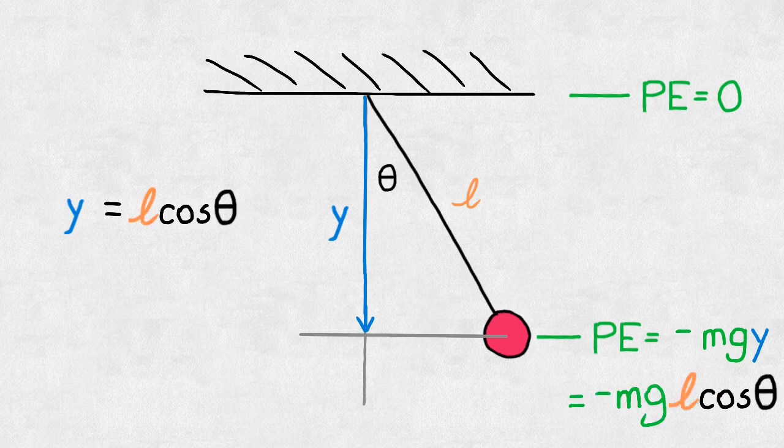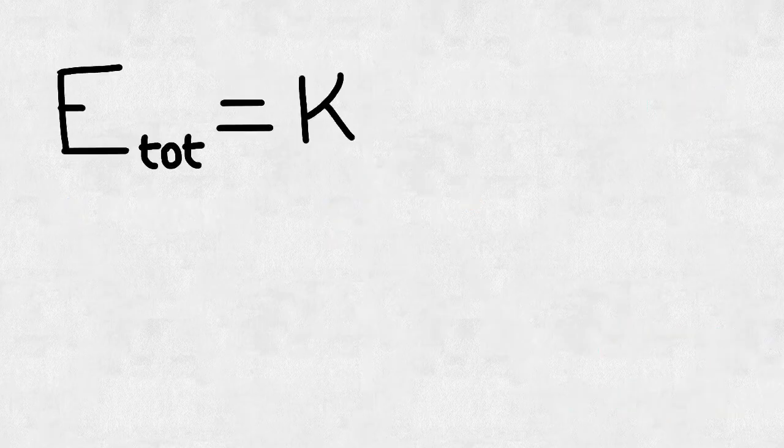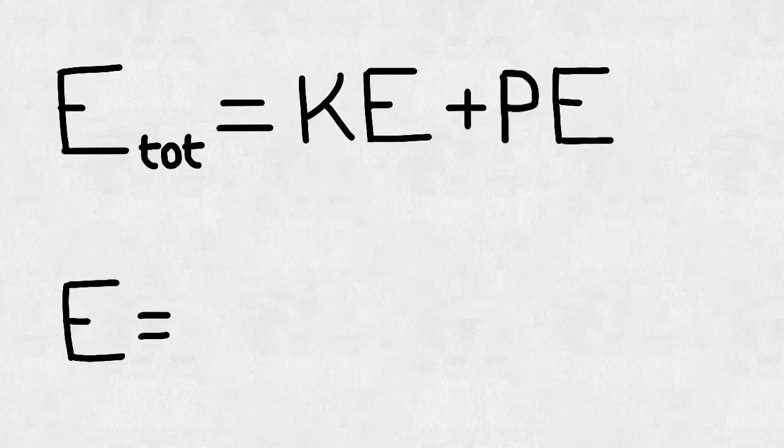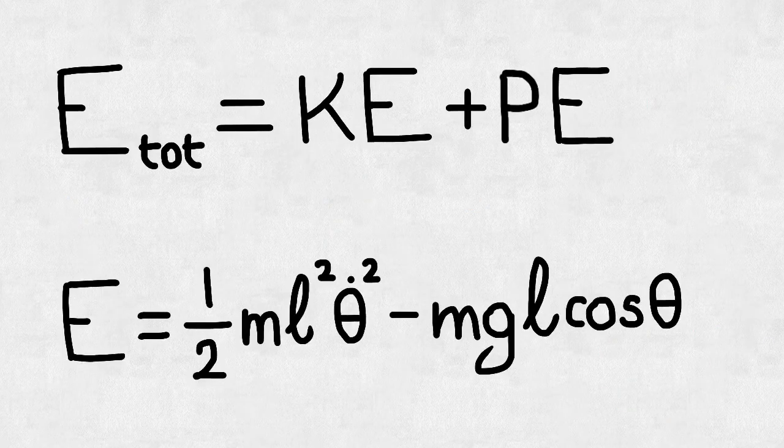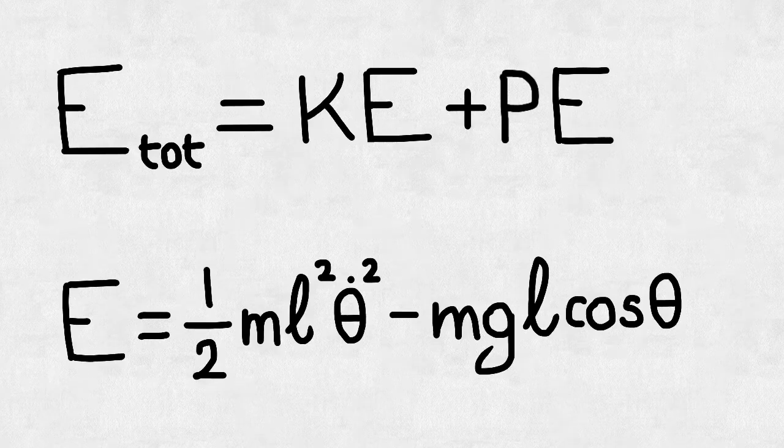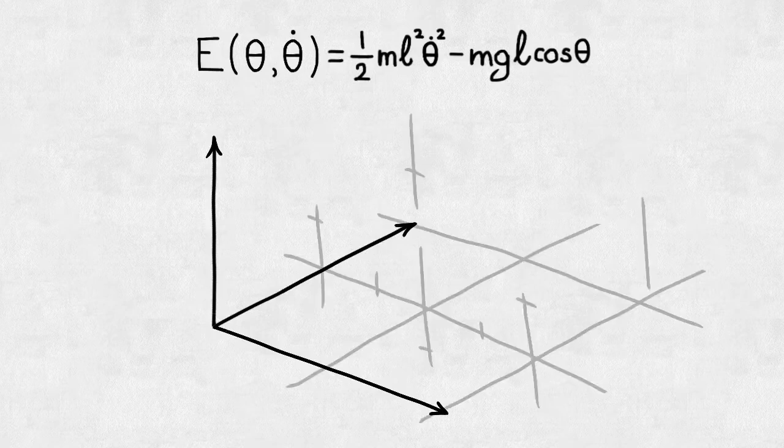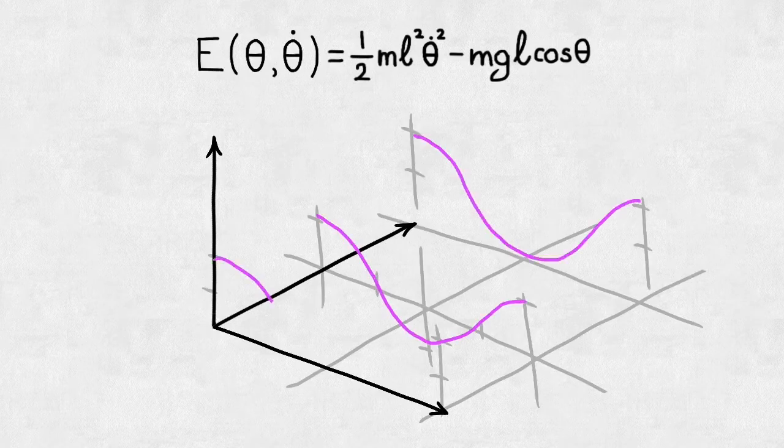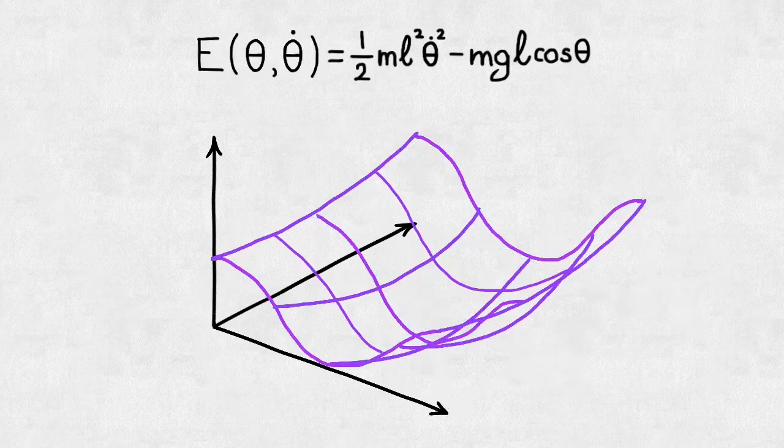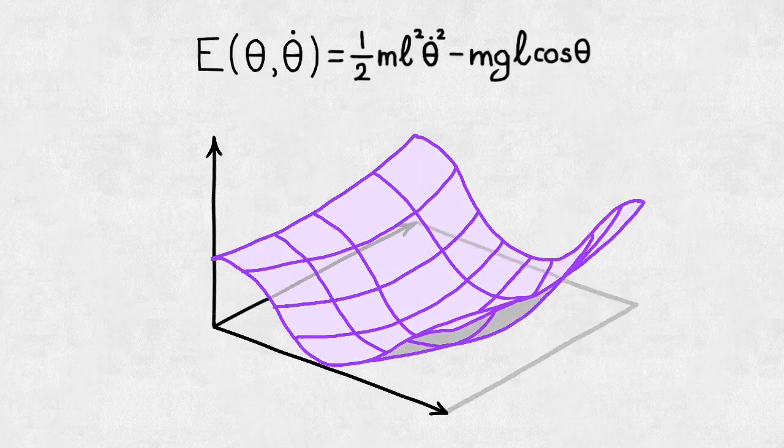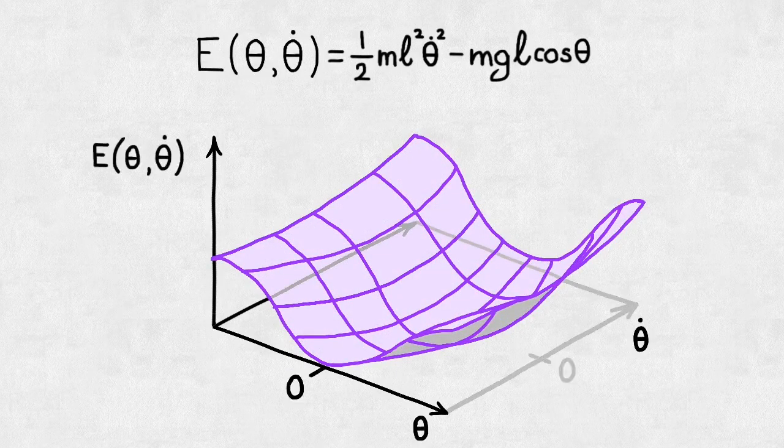Keeping things simple, then if we add these two parts together, we can come up with this function which gives the total energy of the system as a function of its position and velocity. This function is just begging to be plotted, so let's plot the energy as a function of both theta and theta dot. Slowly, this curvy and undulating purple surface materializes.